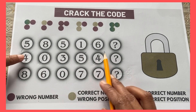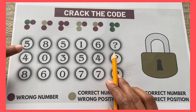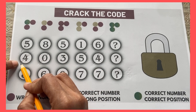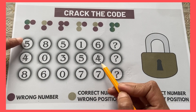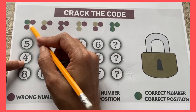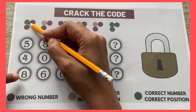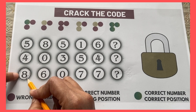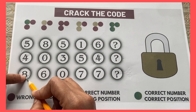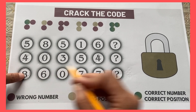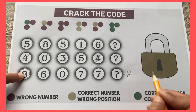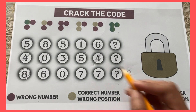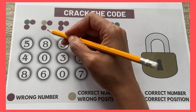Since yellow means correct number in the wrong position and green means correct number in the correct position, choosing four creates a conflict. So four is the wrong number. After crossing out the wrong numbers, the correct number is eight. Eight is the correct number in the correct position, and it appears in that same position.